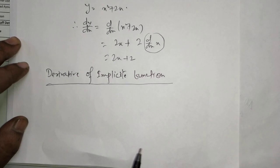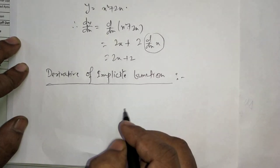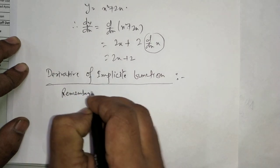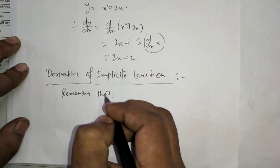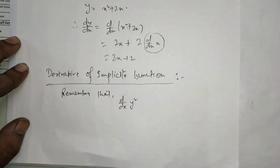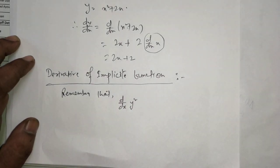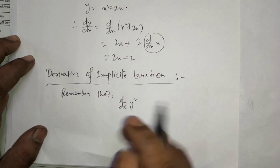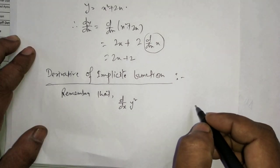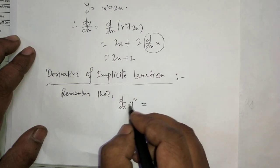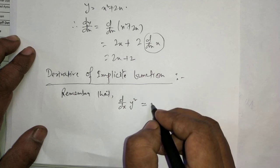Derivative of implicit function — remember these key points. How to find d/dx of y squared? Remember that y depends on x; y is a function other than x itself. You know d/dx of x squared equals 2x. Similarly, treating y, d/dx of y squared becomes 2y.